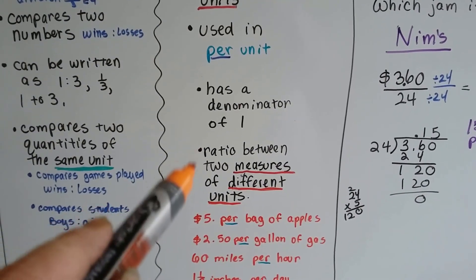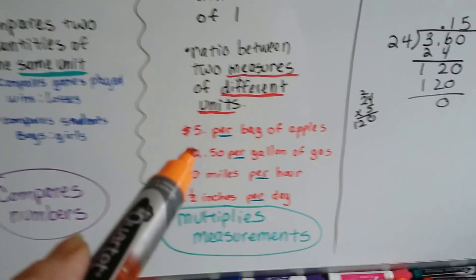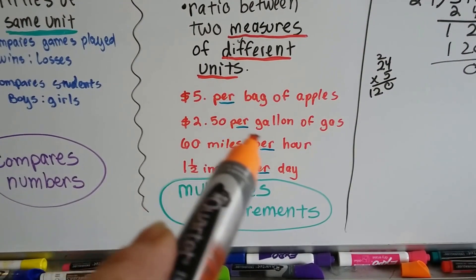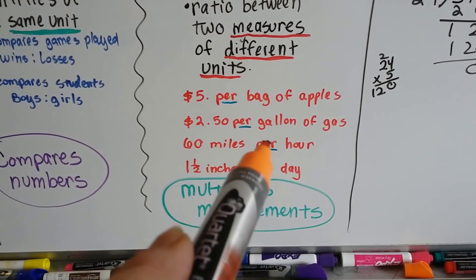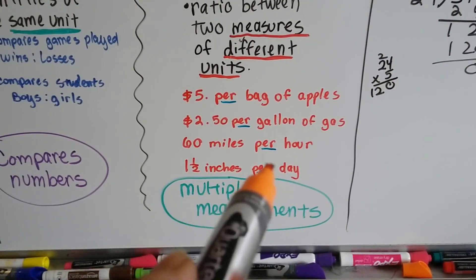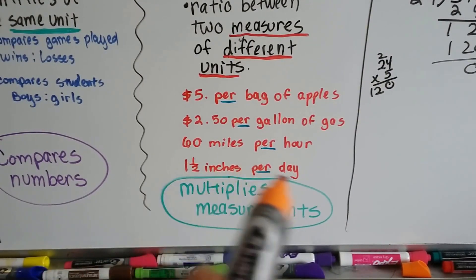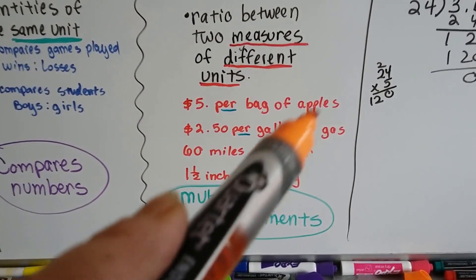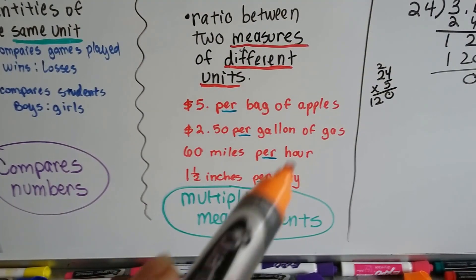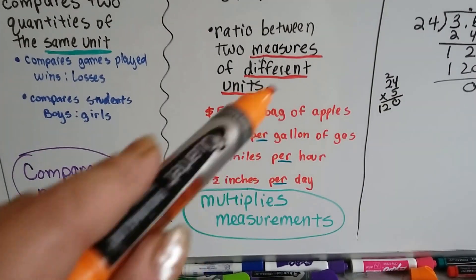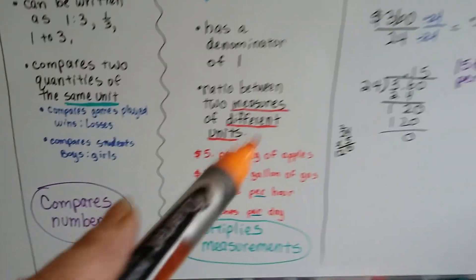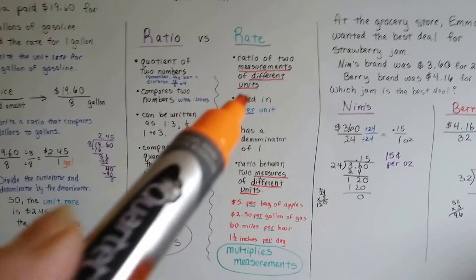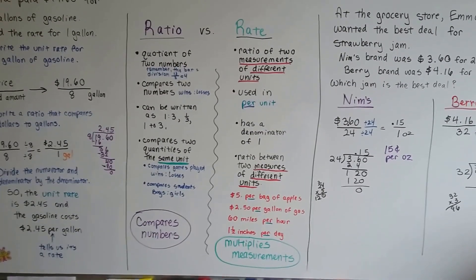It's the ratio between two measures of different units: $5 per bag of apples, $2.50 per gallon of gas, 60 miles per hour, 1.5 inches per day. See how the word 'per' is used? It's comparing money, miles, or inches to apples, gallons, hours, or days — these are all units of measure. When you think of rate, think of unit of measure, think of miles per hour. What's your rate of speed? 60 miles per hour.